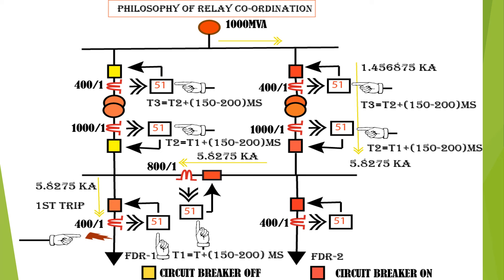The relay coordination philosophy for Case 2: with one transformer under shutdown and one running with bus coupler on, the fault current is supplied from the source through the transformer via the bus coupler breaker to the fault at feeder 1. A current of 5.8275 kA flows at feeder 1, sensed by the bus coupler and by the LV side CT of transformer 2. On the HV side, the reflected fault current is one-quarter of 5.8275 kA, equal to 1.46875 kA.